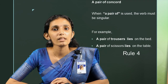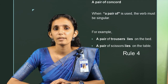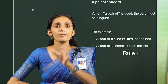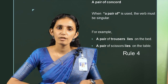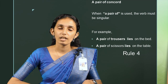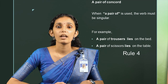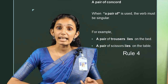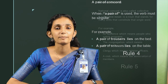Rule number 4: A pair of concord. When 'a pair of' is used, the verb must be singular. For example, 'A pair of trousers lies on the bed' and 'A pair of scissors lies on the table.'